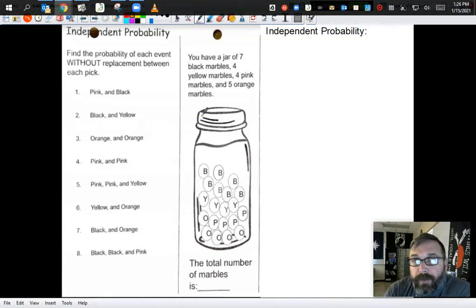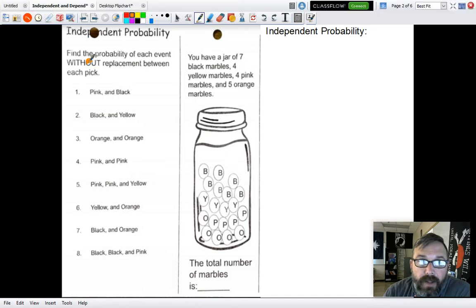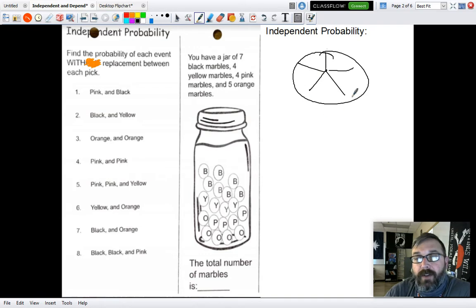Okay, so we've discussed compound probability, but now let's get into independent probability. Independent probability is when we find the probability of each event with replacement between each pick. So that means that the probability of the first event is independent of the probability of the second event.